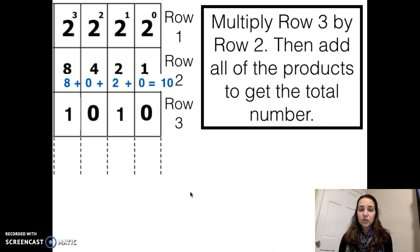If you notice, the trick that I'm using is multiplying the third row by the second row. Here, I did 1 times 8, which gave me 8. 0 times 4, which gives me 0. Then I can add all the values together to get the sum that I'm looking for.